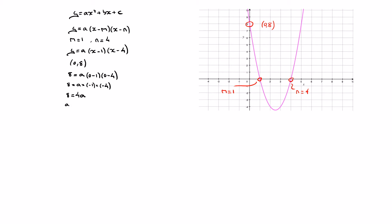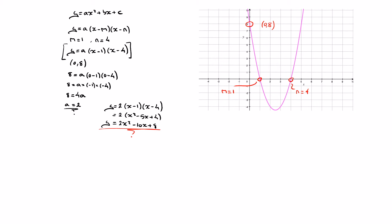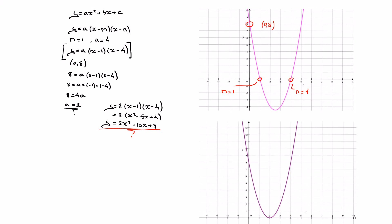Since negative one times negative four equals four, this leads to eight equals four a, so a equals two. Using a equals two in our equation gives y equals two times x minus one times x minus four. Distributing, that's two times x squared minus five x plus four, and finally distributing the two gives y equals two x squared minus ten x plus eight.